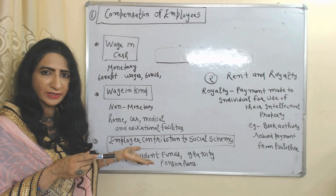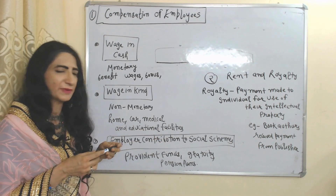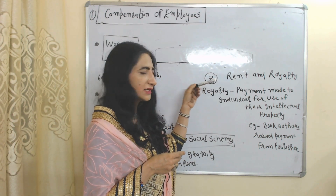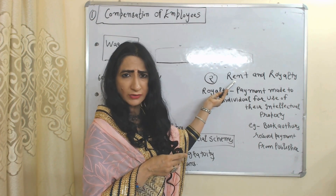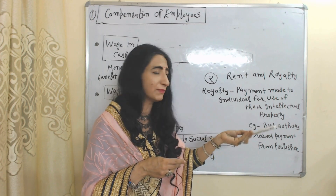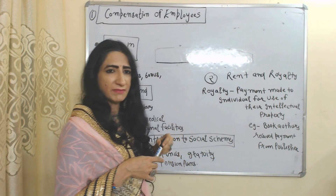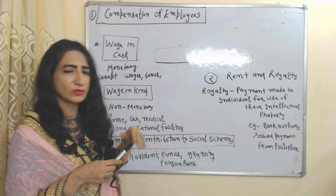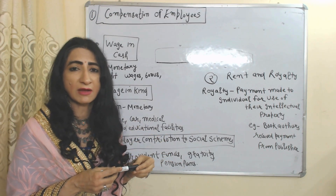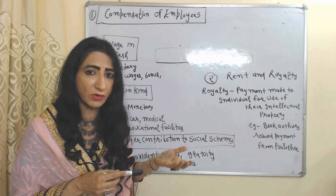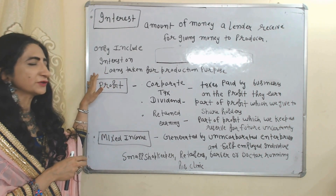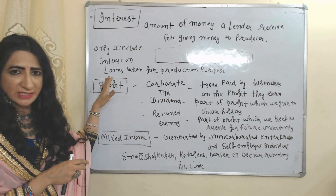Employer contribution to social schemes includes provident fund, gratuity, and pension plans. The second component is rent and royalty. Rent is payment received through land and building. Royalty means a payment made to an individual for the use of their intellectual property — for example, a book author receiving payment from a publisher.